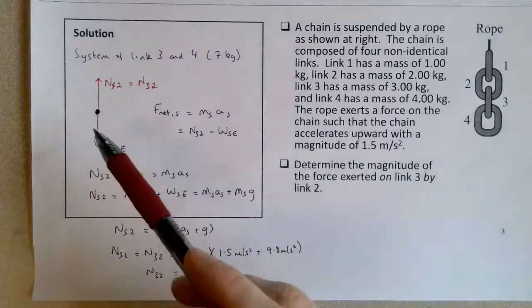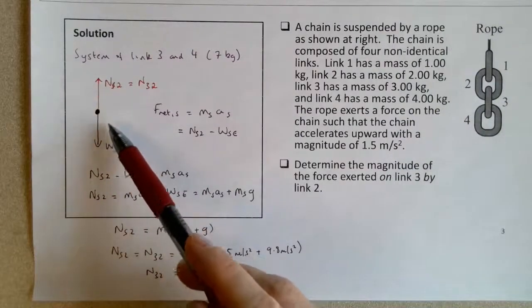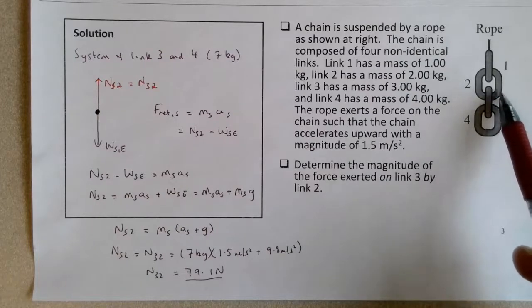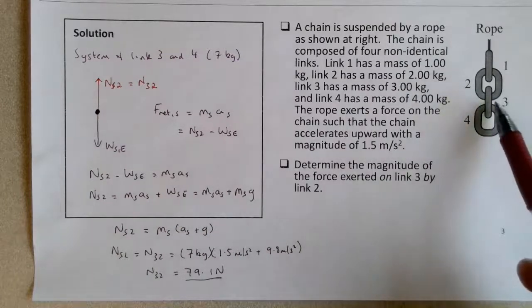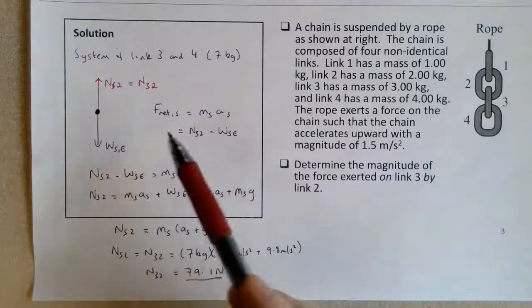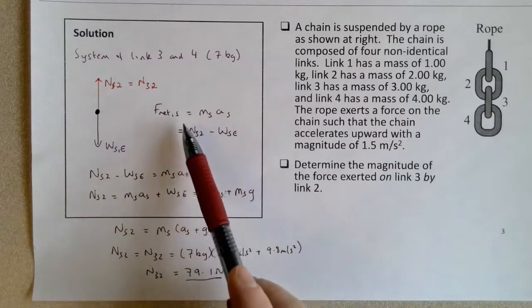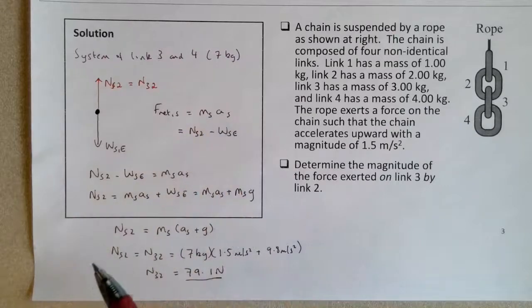And it adds an extra couple of steps, whereas if you just combine link 3 and link 4 into a single system, you only need to focus on two individual forces, where the upward force on link 3 by 2 is equal to the upward force on the system of 3 and 4 by link 2. And they would have the same magnitude, and then you can just focus on the two forces and then the net force being M times A. And you're given A, you have the total mass, and you end up solving for that force on link 3 by link 2.